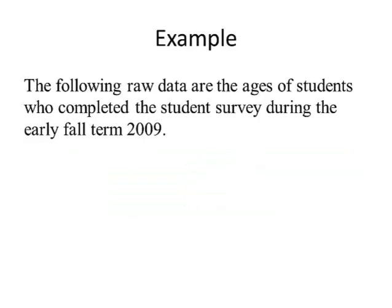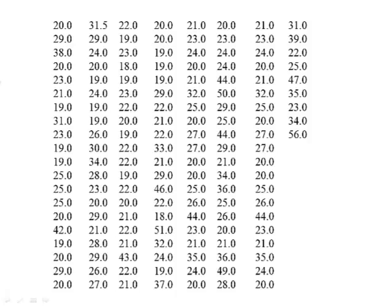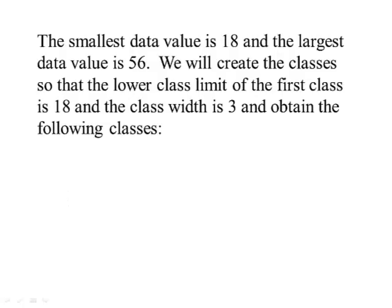Let's look at some raw data involving the student survey for the early fall term 2009. There was a total of 149 students that took the survey, and we're going to look at the ages. So here's the raw data. It's very hard just to look at this data and get anything from it. The smallest value is 18 years of age and the largest is 56.